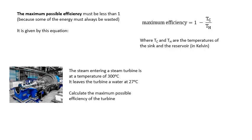Let's look at an example. It's very similar to one I saw on an exam paper. The steam entering a steam turbine is at a temperature of 300 degrees centigrade. It leaves the turbine as water, I should say, at 27 degrees centigrade. Calculate the maximum possible efficiency of the turbine.